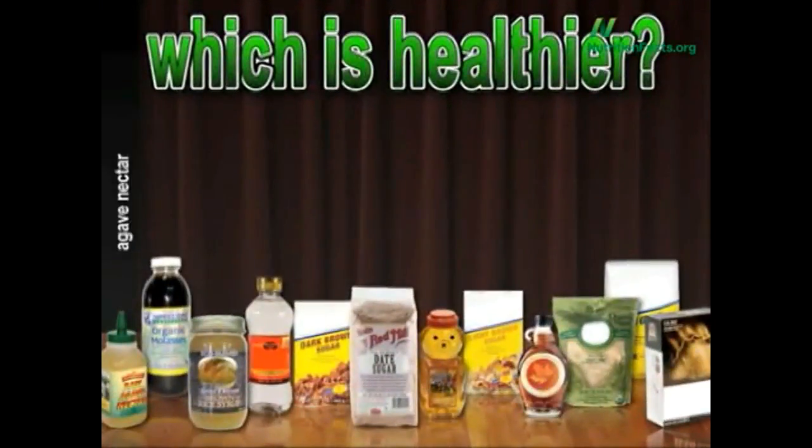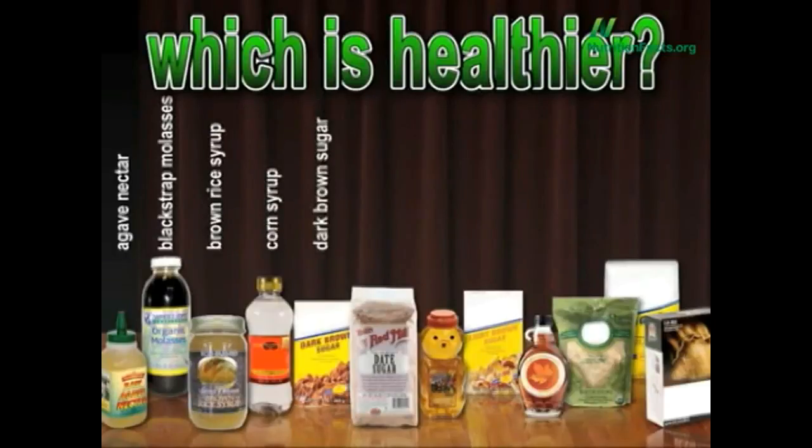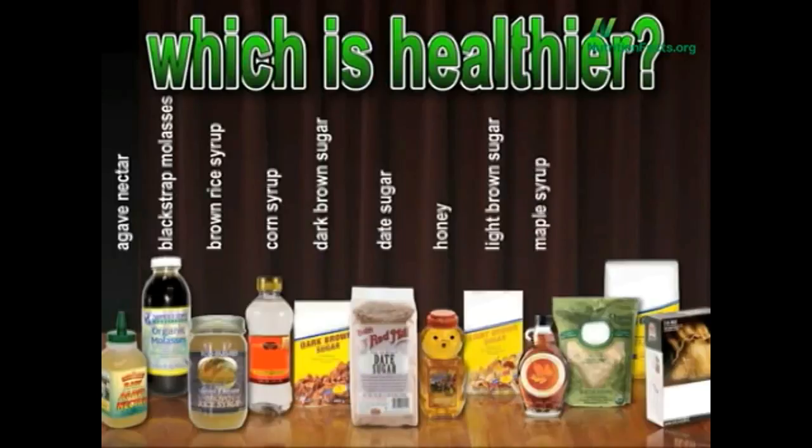Which is healthier? In alphabetical order: agave nectar, blackstrap molasses, brown rice syrup, corn syrup, date sugar, dark brown sugar, light brown sugar, maple syrup, honey, raw cane sugar, plain old sugar sugar, or turbinado sugar.